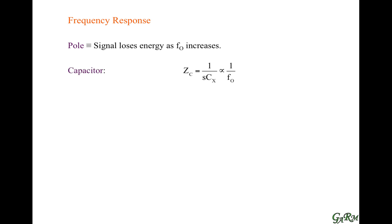In the case of a capacitor, the capacitor impedes current in a way that its impedance is inversely proportional to capacitance — when capacitance is greater, the impedance is lower. It's also inversely proportional to frequency, which in the Laplace domain we use S to refer to. So as frequency increases, a capacitor impedes current less.